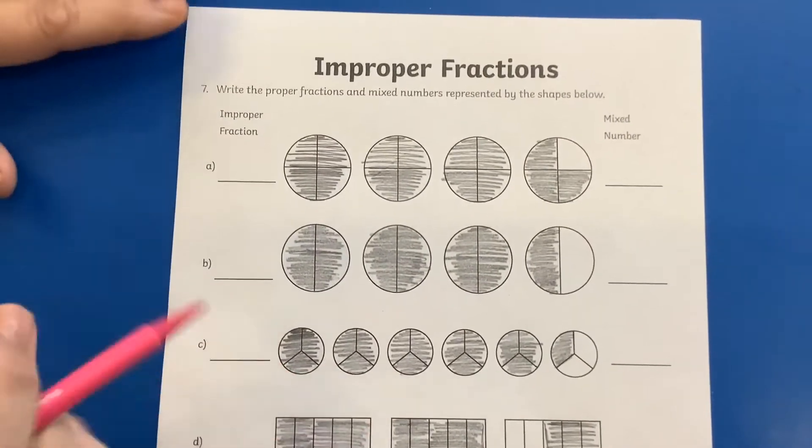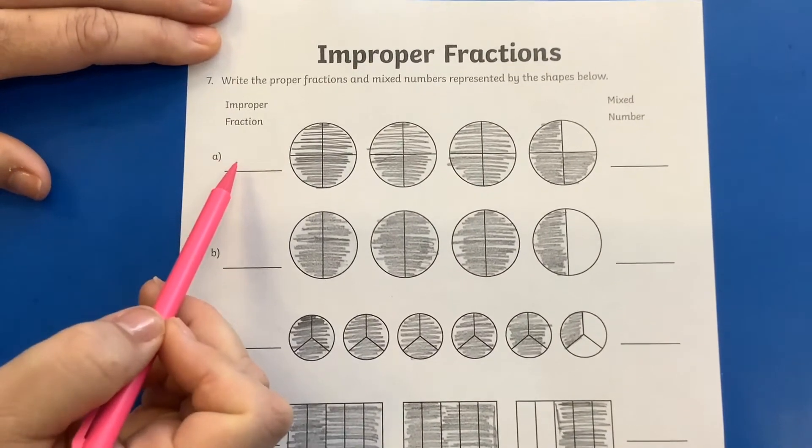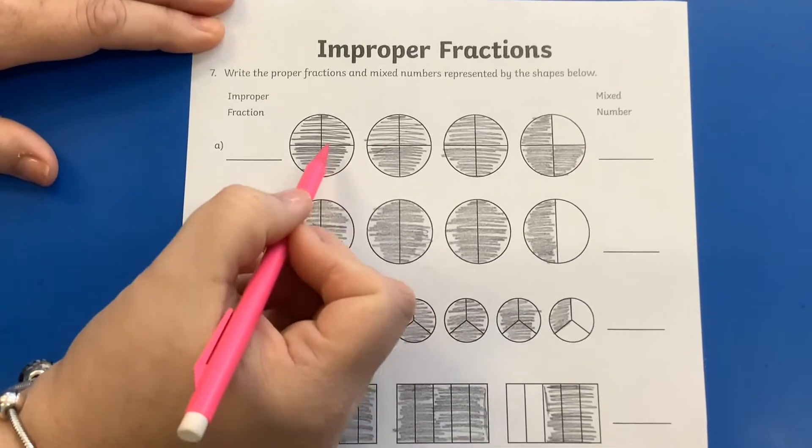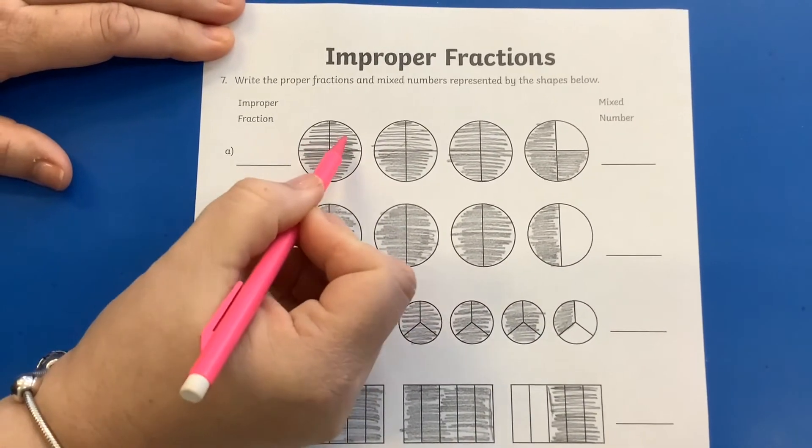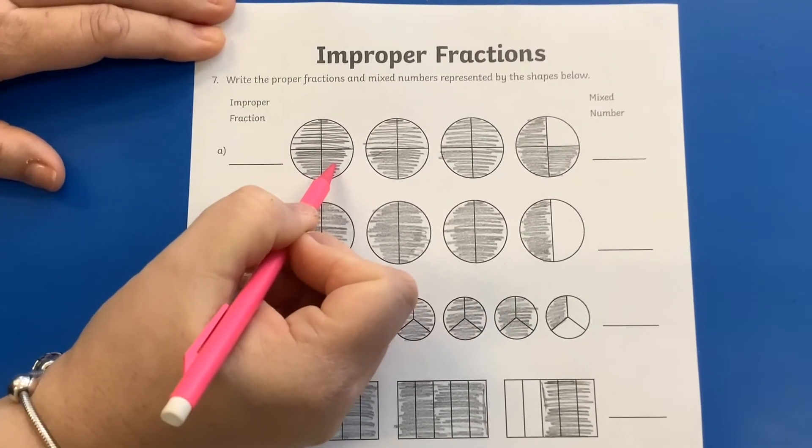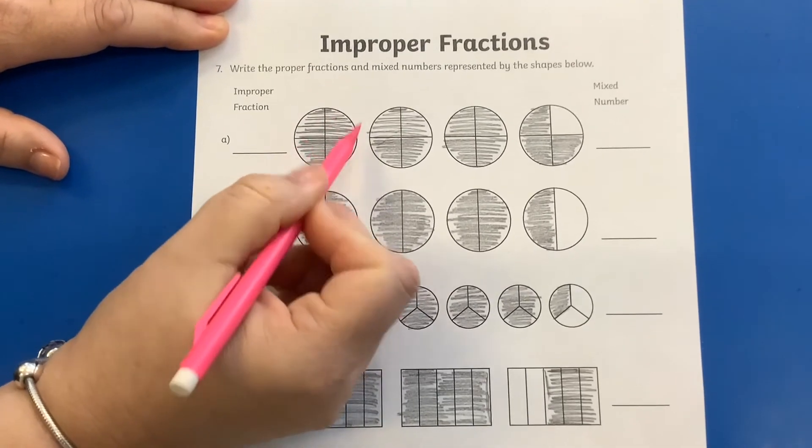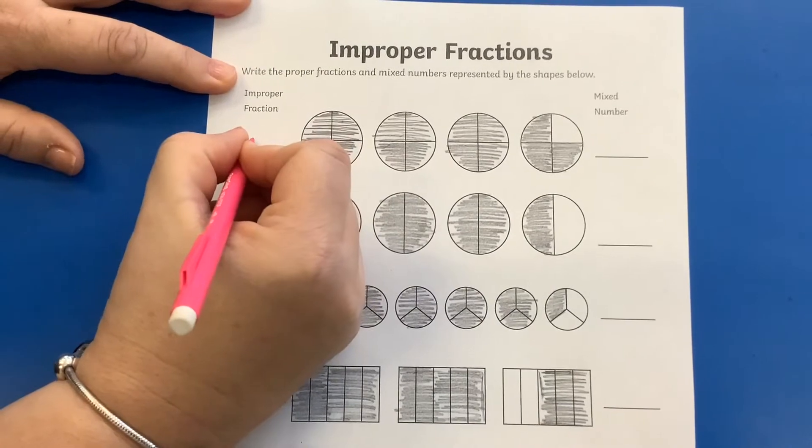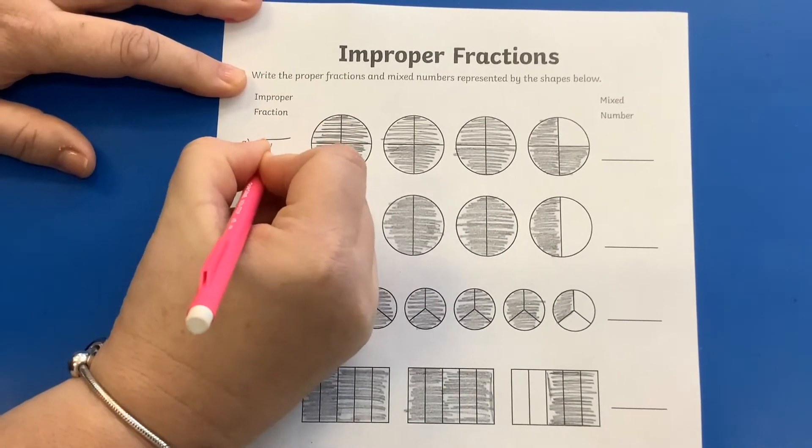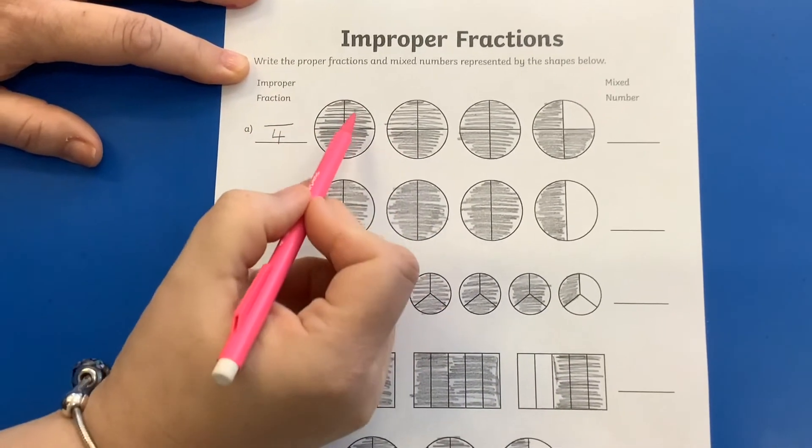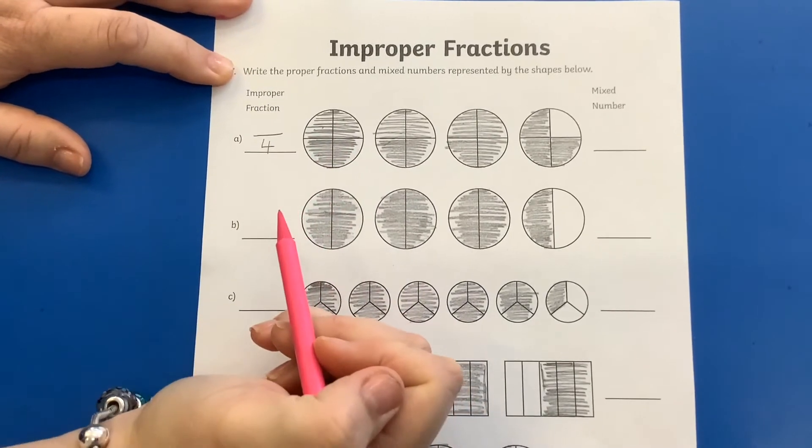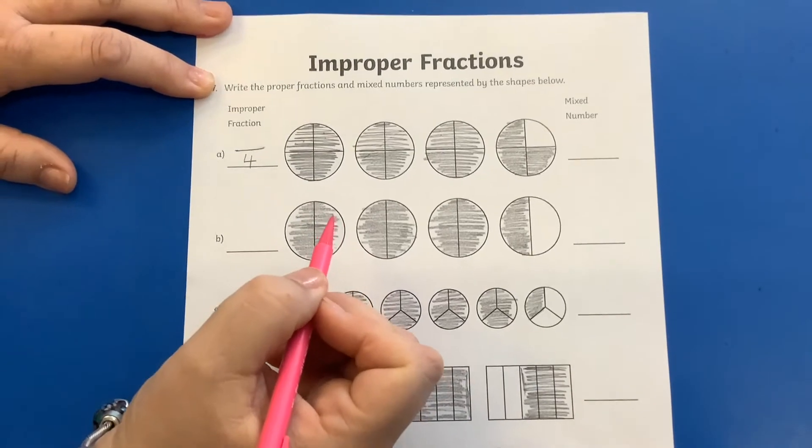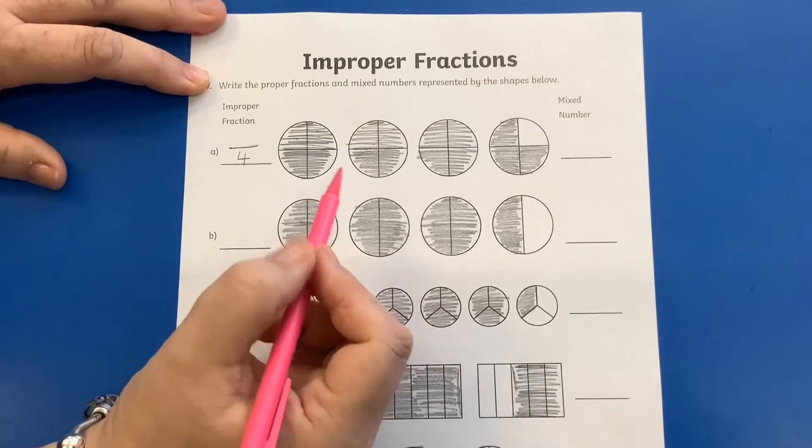So first of all we need to write it as an improper fraction, and then as a mixed number. So the fraction we're going to be writing in, if you can see, these shapes are all divided into four. So my improper fraction is going to be quarters. So my denominator is four, because each shape is divided into quarters. And then for my numerator at the top is how many of those are shaded.